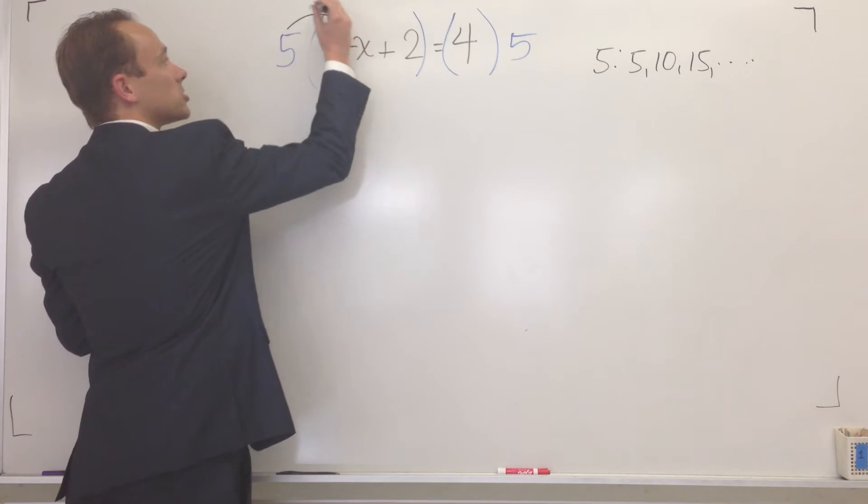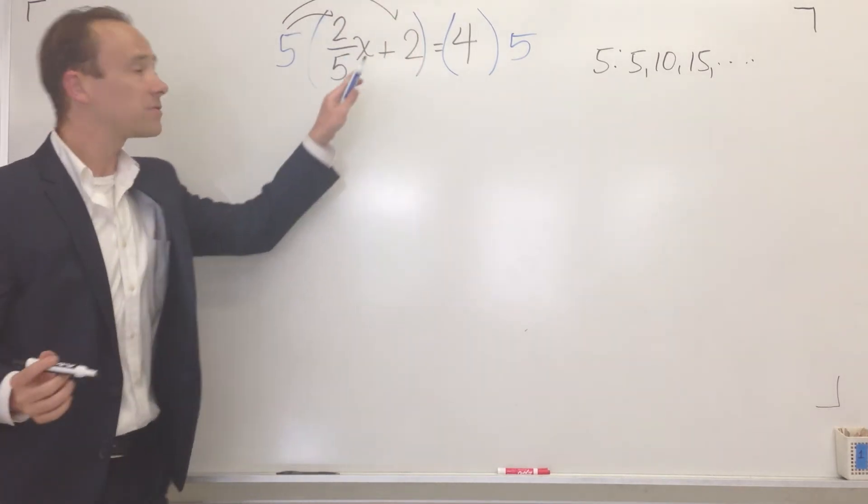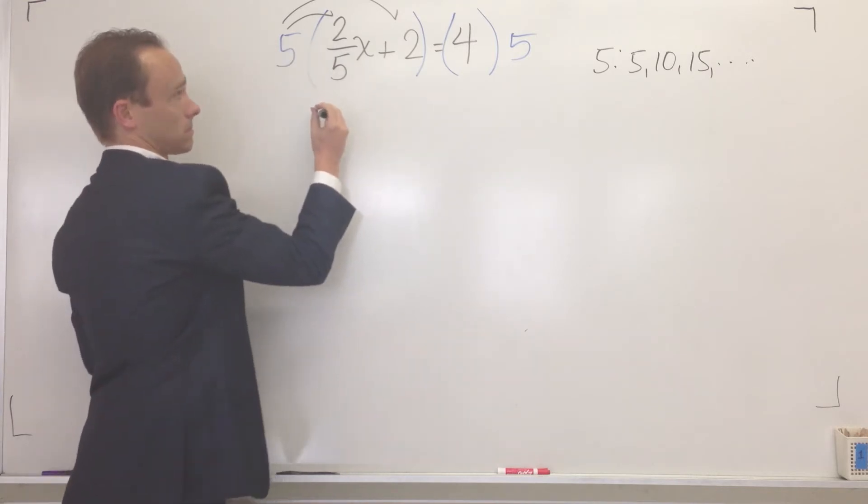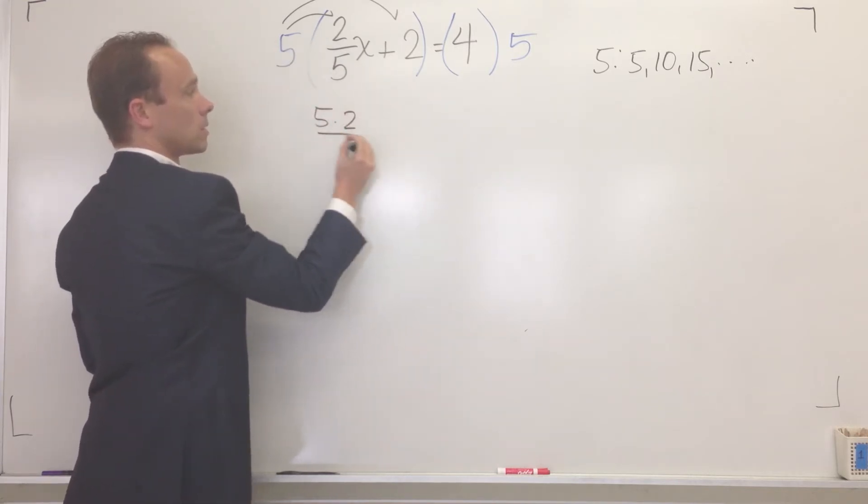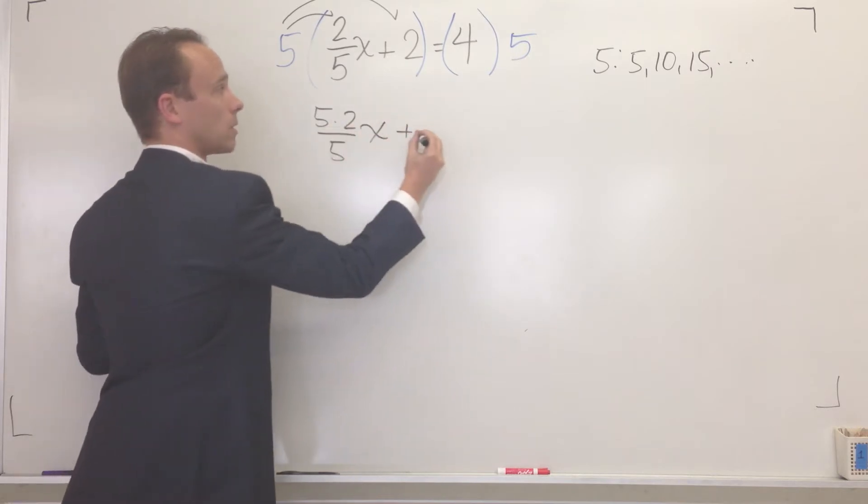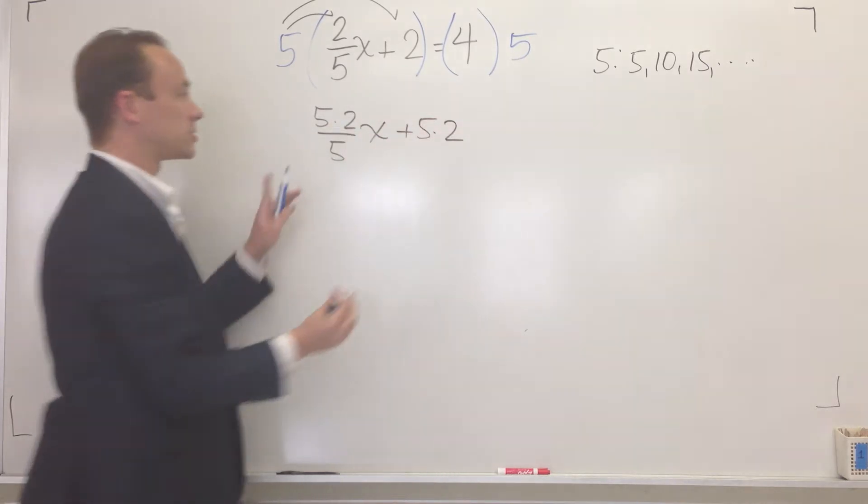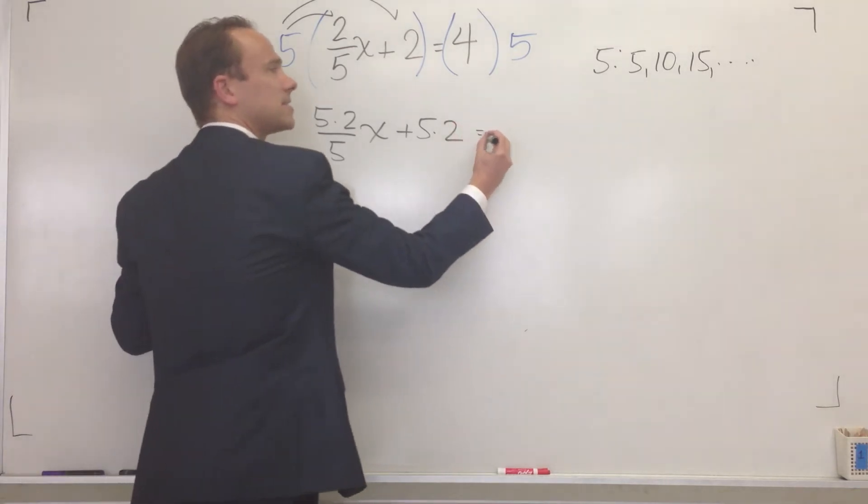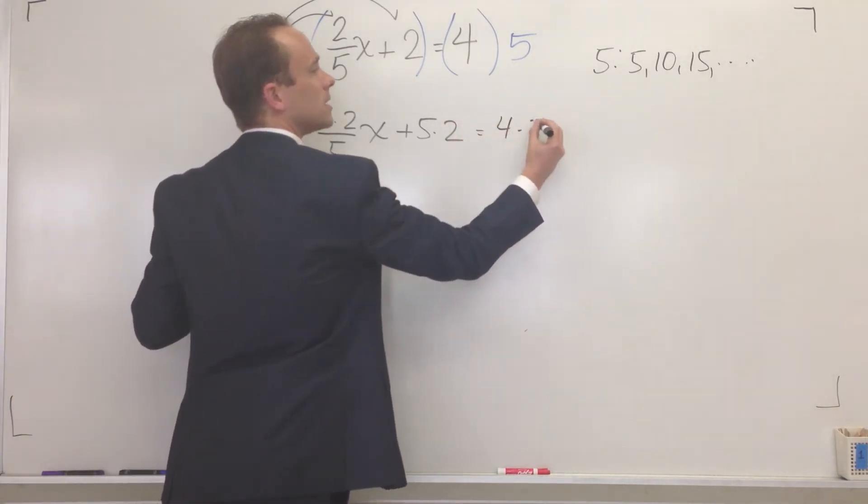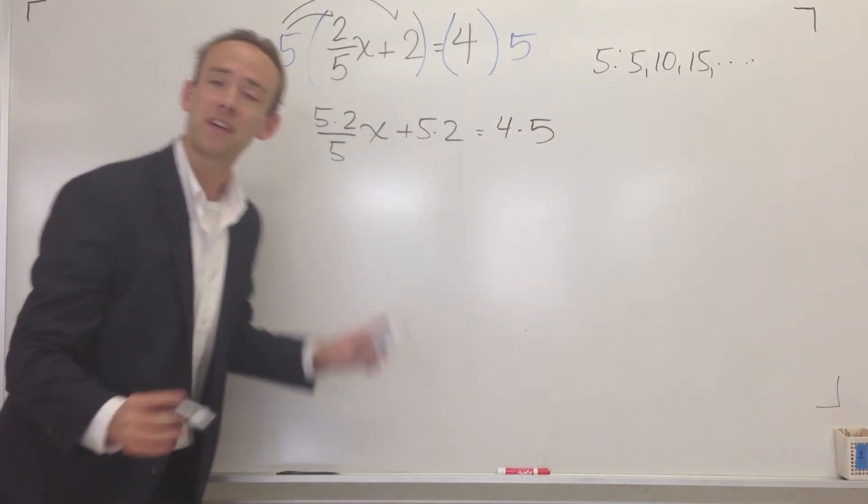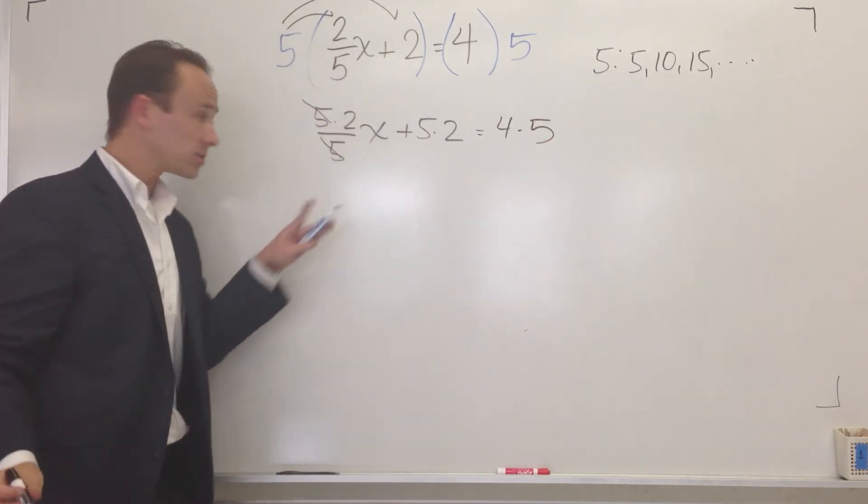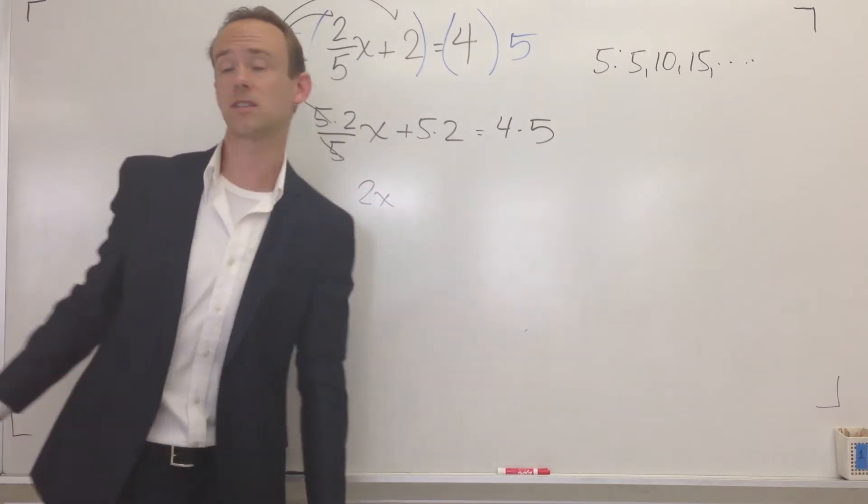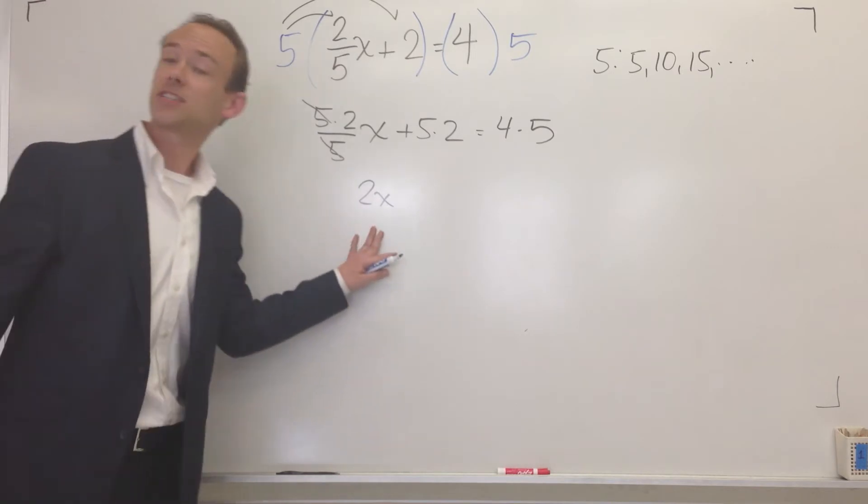All right. So watch what's going to happen now. I'm going to distribute this five. Do you see a fraction? Yeah, I still see one. It's right there. No worries. That's multiplying both sides by five. Now look what happens. Do you see a fraction? I don't see no fraction. That fraction's gone.